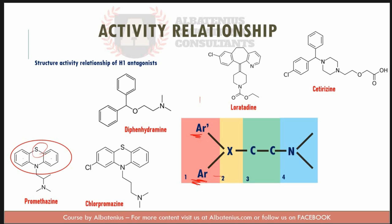Finally, let's discuss the fourth group — the terminal nitrogen. Tertiary amines give maximum antihistamine activity. It may be part of a heterocyclic ring and still retains high antihistamine activity.